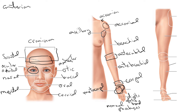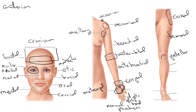Then we go to the lower limb. We have where the lower limb meets the trunk — this is the hip region, which is the coxal region. Then we have the thigh, which is the femoral region, same on front and back. The knee: the back side is called the popliteal region, and the front side is called the patellar region — that's the patella under there.